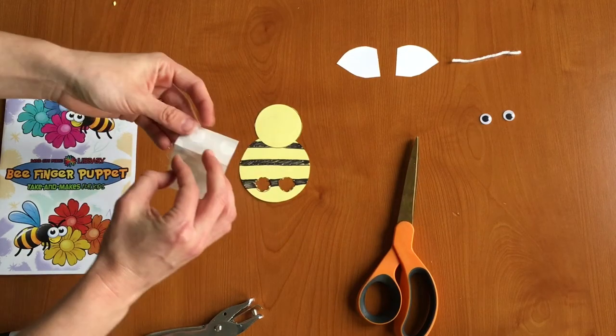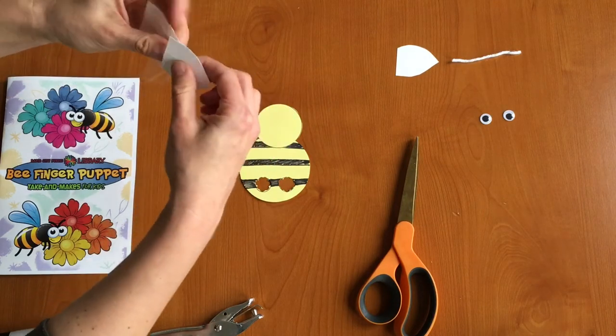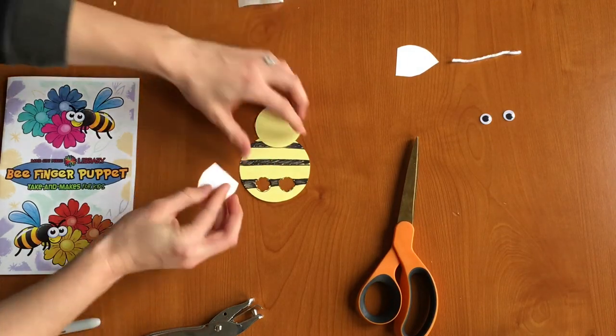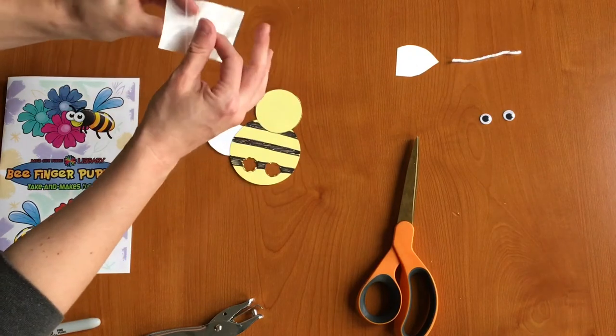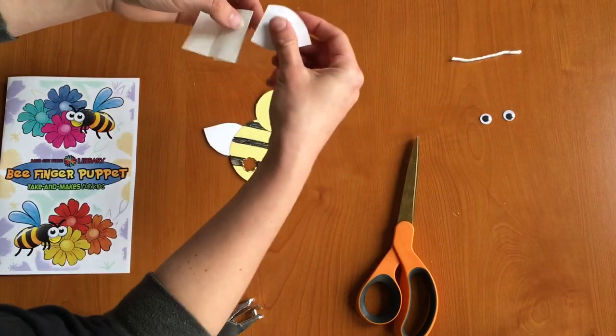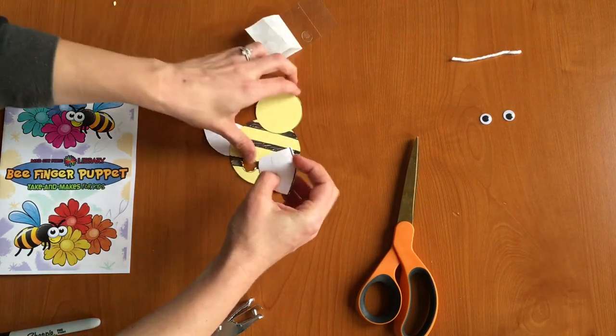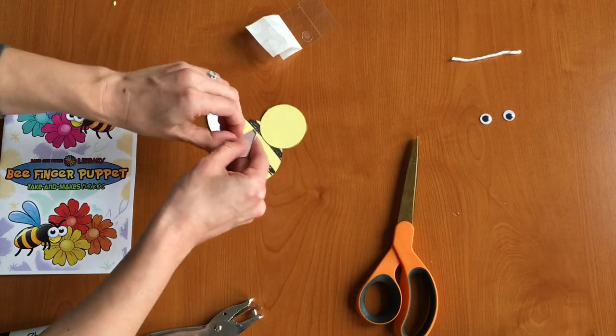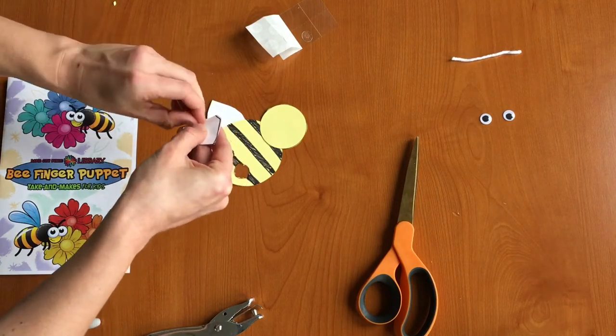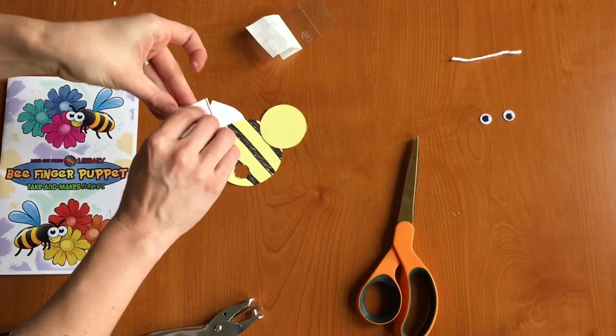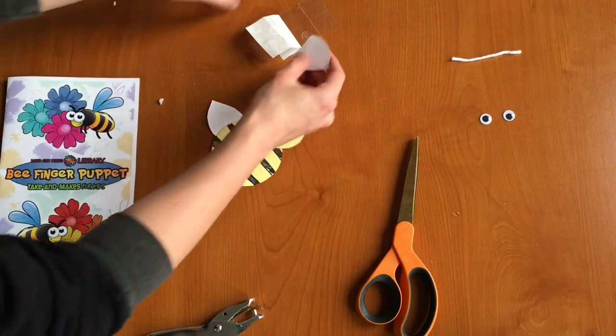Now let's take another glue dot and we're going to put it on the edge of one of the wings and we're going to attach it to the back of the bee's body on this side and we'll do the same thing with the other one. You know what? I'd like to do it on the other side. So I'm going to take this glue dot off. And let's try that one more time.